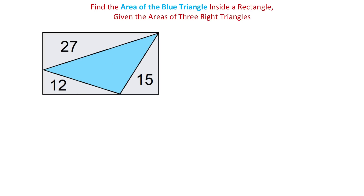There are multiple methods for solving this problem and here we will explore one of them. If we could find the area of the entire rectangle, then we would subtract the areas of these three triangles and we would get the area of the blue triangle. So let this rectangle have one side A and another side B.